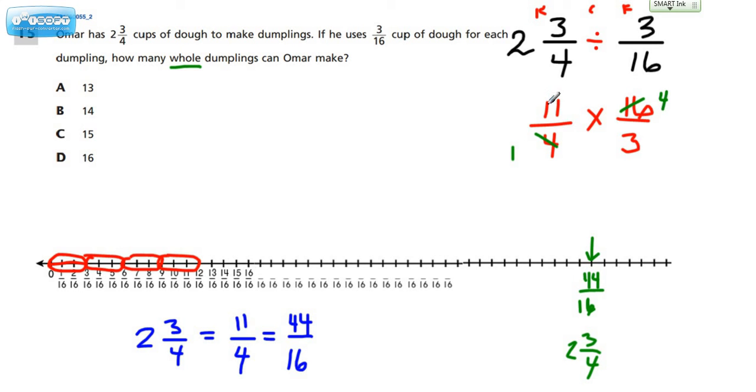And we don't have a GCF between this numerator and denominator, so we're ready to go across and multiply eleven times four, which would be forty-four, and one times three, which would be three.